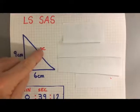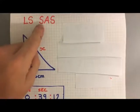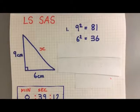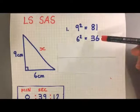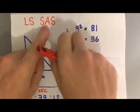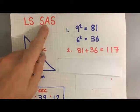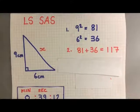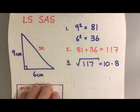So I'm being asked to find a long side. Long side: square, add, square root. First thing I'm going to do is I'm going to square 9 to get 81. I'm going to square 6 to get 36. Remember, the next thing I need to do is to add those together. 81 plus 36 is 117. Last thing I need to do is square root that answer.